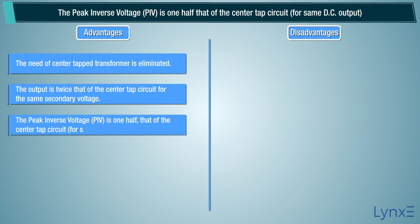The peak inverse voltage PIV is one half that of the center tap circuit for same DC output.